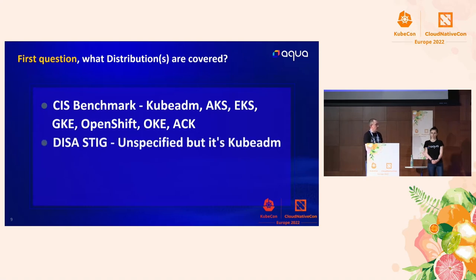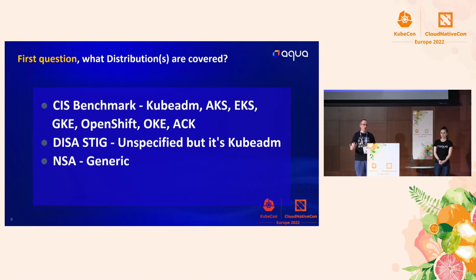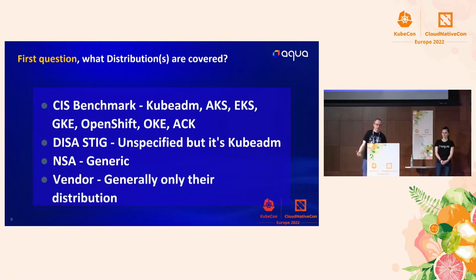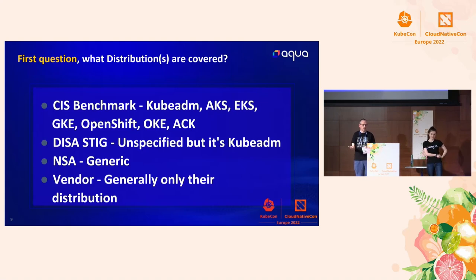DISA STIG does not specify its distribution, but when you read it, it's clearly KubeADM. NSA is generic — it's a hardening guide, not a compliance checklist; they stay away from specific file paths, which means you don't have to worry too much about distribution mismatches. Vendors generally cover only their own distribution — Microsoft are not going to write 130 different CIS-style checks for different distributions; they'll focus on AKS, which is completely understandable. So the first question is: is your distribution covered?